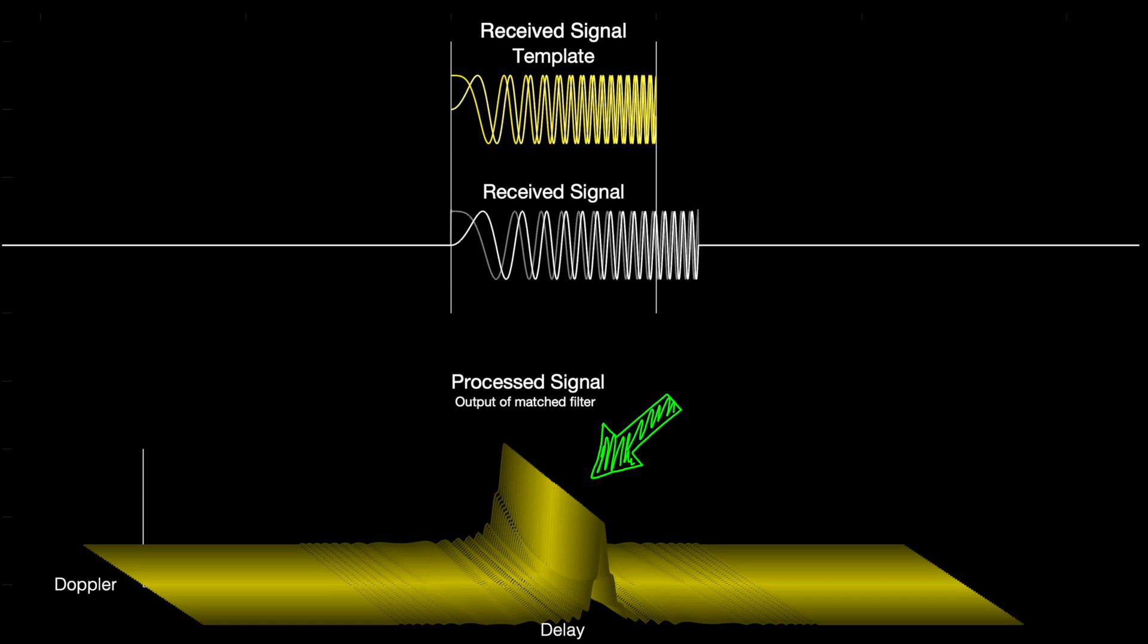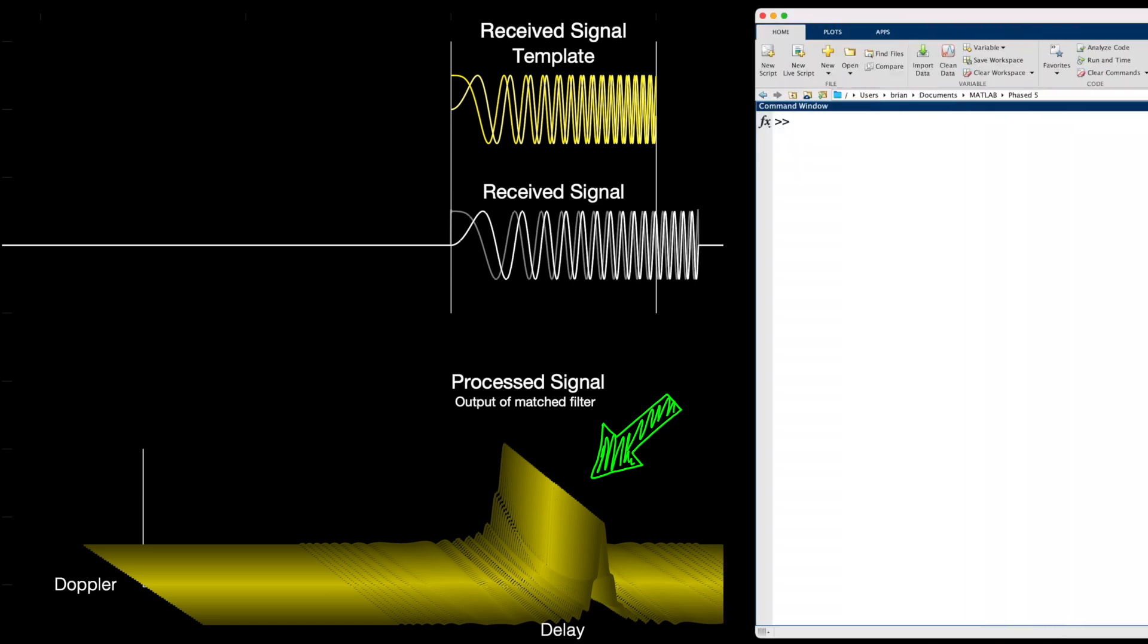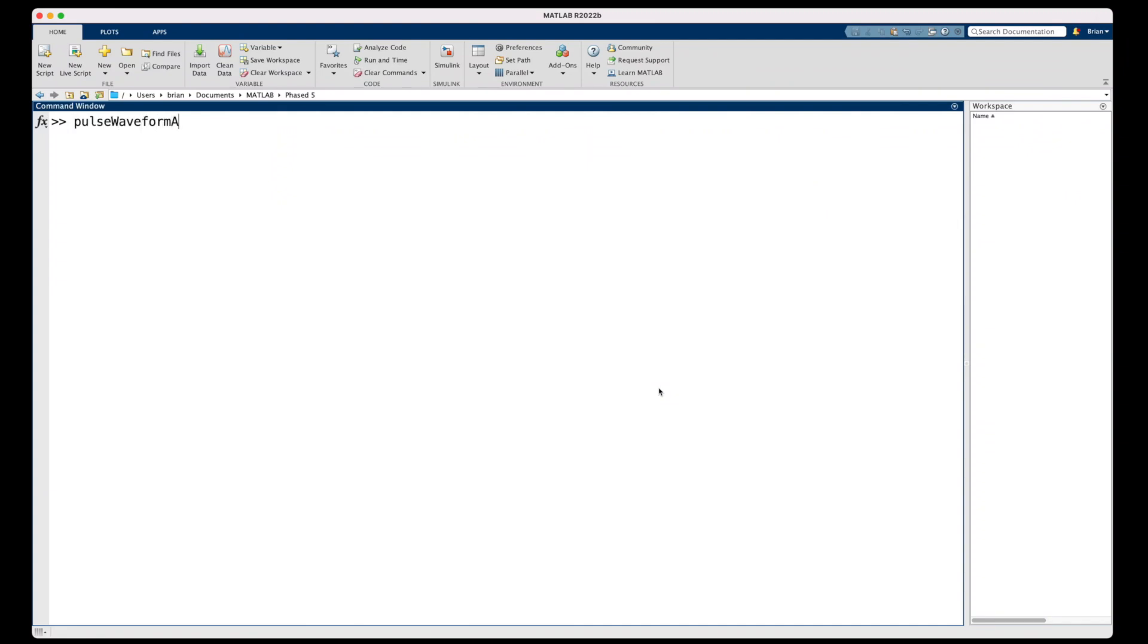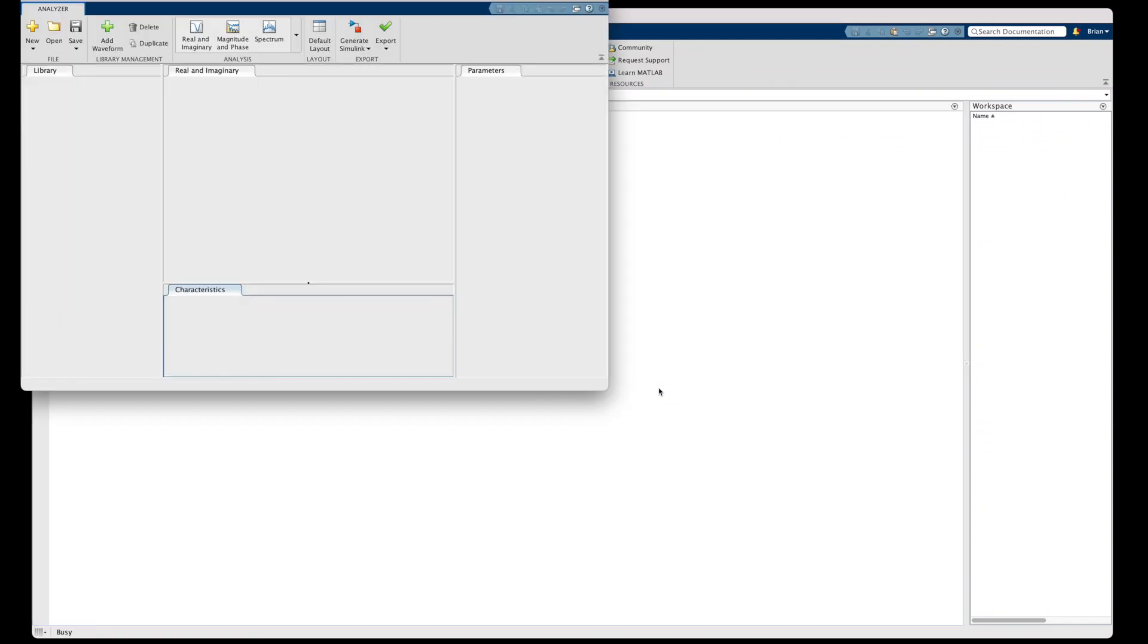Now, if you want an even better visualization of this and a far better understanding of the ambiguity function and how to use it for waveform analysis, I recommend that you check out the Pulse Waveform Analyzer app in MATLAB.